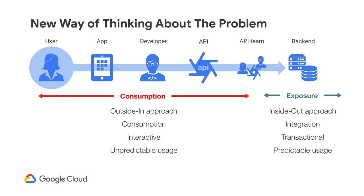There's a new way to think about the problem of services. Traditionally we thought of this as an exposure problem — we've got data and need to expose it through a service. But there's a better pattern our most successful customers adopt: thinking about it from the outside in. Rather than just exposing a service, we think about the end user, their experience, how we empower the developer who writes the application. That comes from having great APIs, and that's what the API team does.